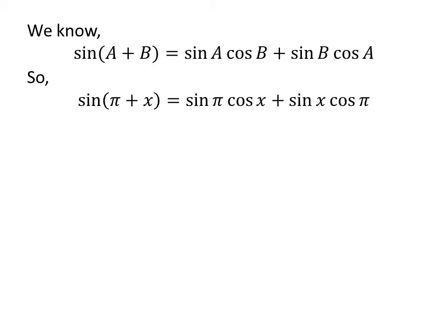Let us apply the above identity for sine of pi plus x. Here, a is pi and b is x. So, sine of pi plus x is equal to sine of pi times cosine of x plus sine of x times cosine of pi.